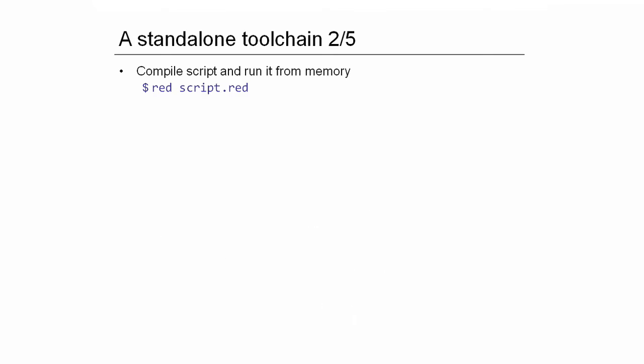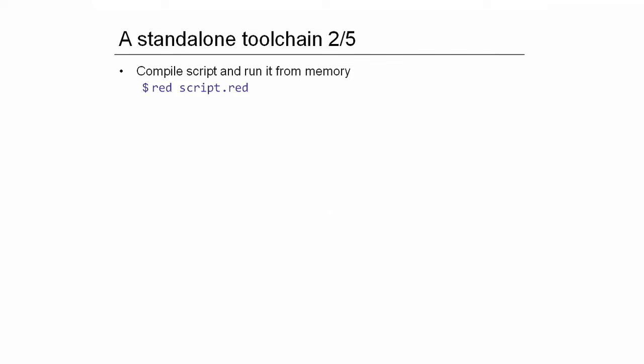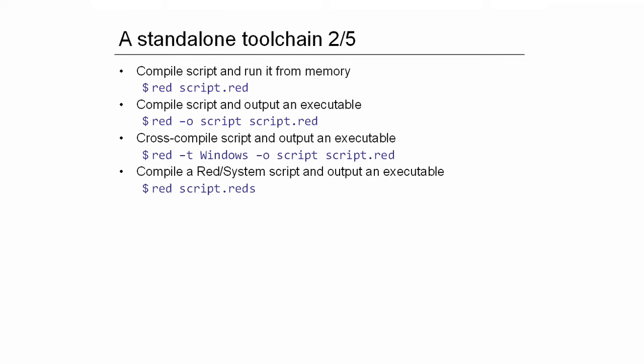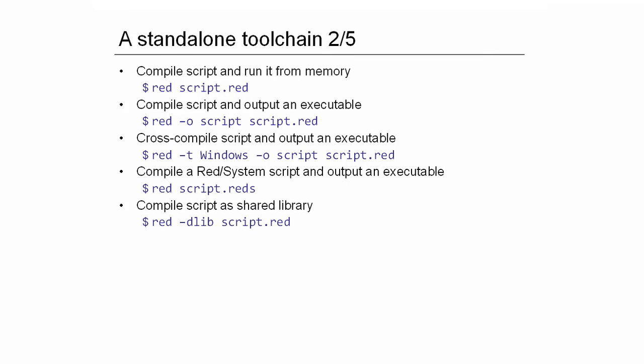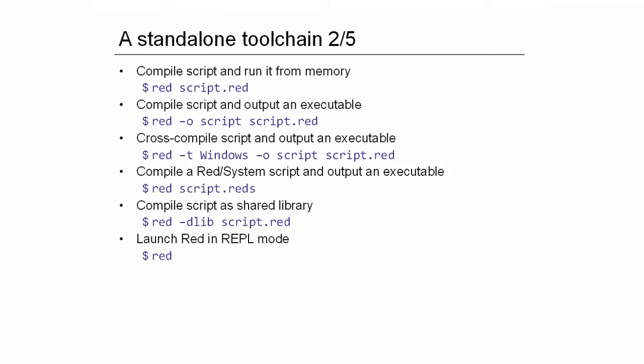More practically, here's an overview of how it works. You have RED — one binary you just download — and you get all these features: you can run a Red script directly from memory, compile it to an executable, cross-compile it, directly compile a Red/System script for low-level applications, compile shared libraries to plug RED everywhere, and launch RED in console mode. So we have a RED console.